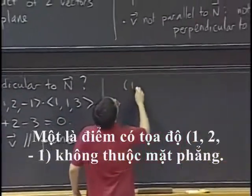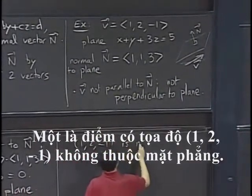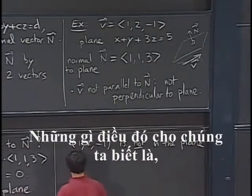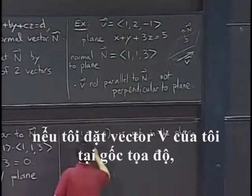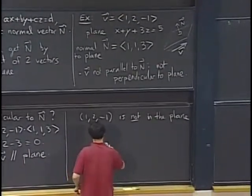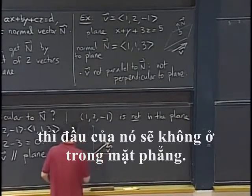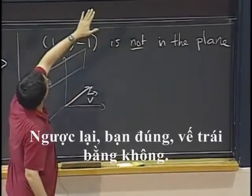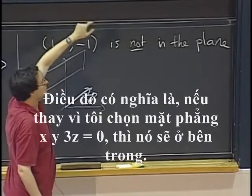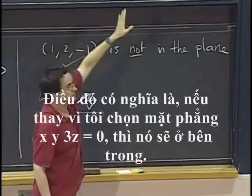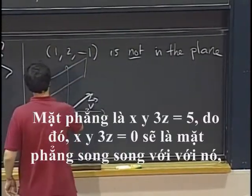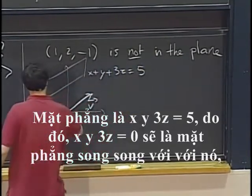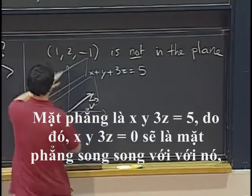One is the point with coordinates 1, 2, minus 1 is not in the plane equation. OK, so what that tells us is that if I put my vector v at the origin, OK, then the point here is not going to be in the plane. On the other hand, you are right, the left-hand side evaluates to zero. What that means is if instead it had taken the plane x plus y plus 3z equals zero, then it would be inside. And the plane, so this one is x plus y plus 3z equals five. x plus y plus 3z equals zero would be a plane parallel to it, but through the origin.